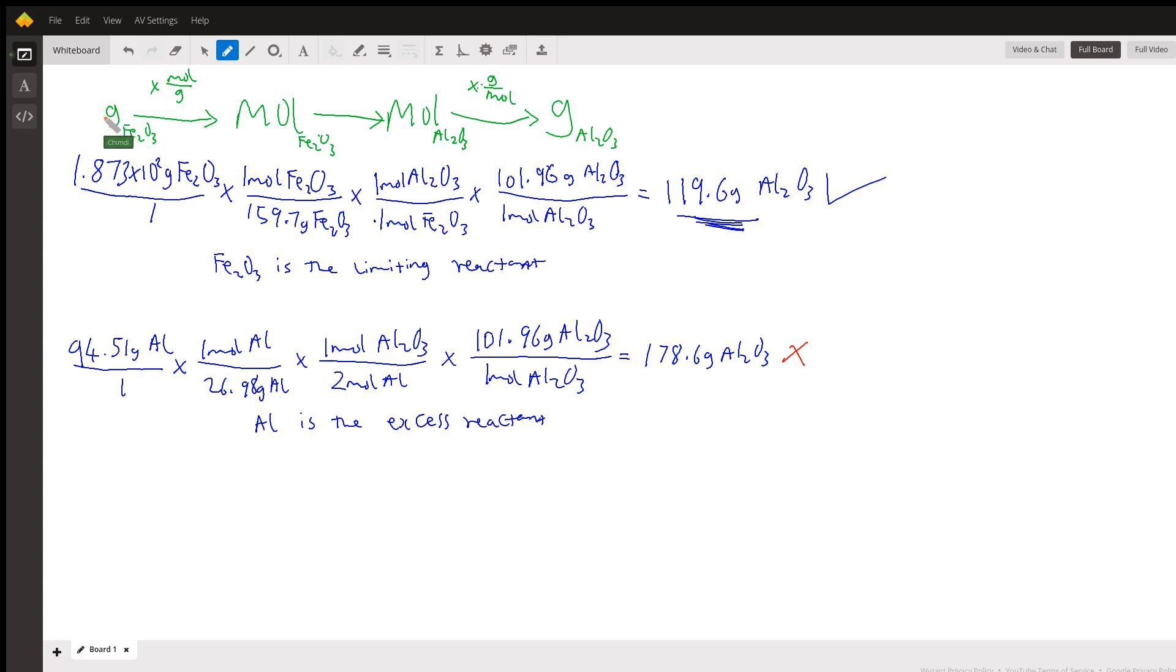The first step was a gram to mole conversion. When we're doing a gram to mole conversion, we use the molar mass of iron three oxide. That's why we had to put the mole on top and the grams at the bottom.